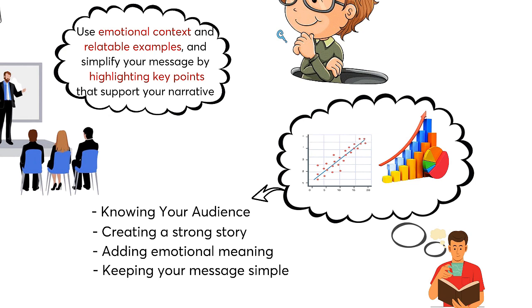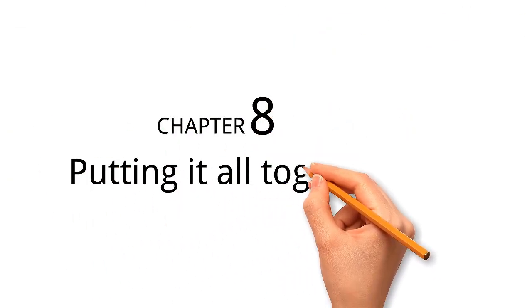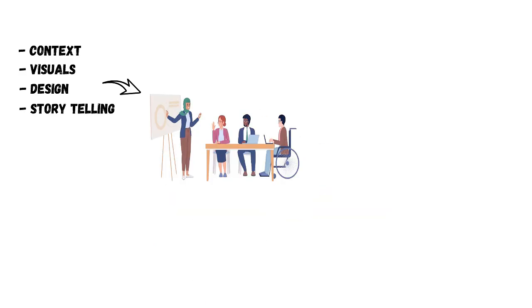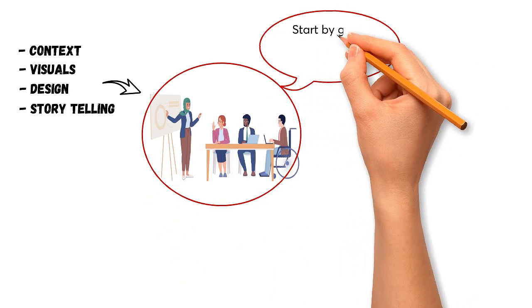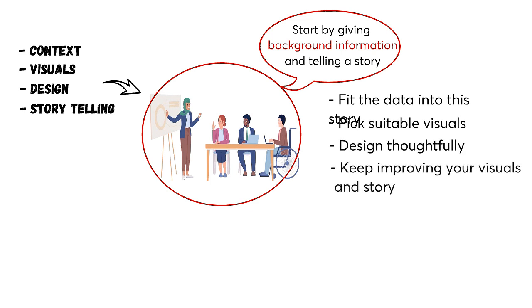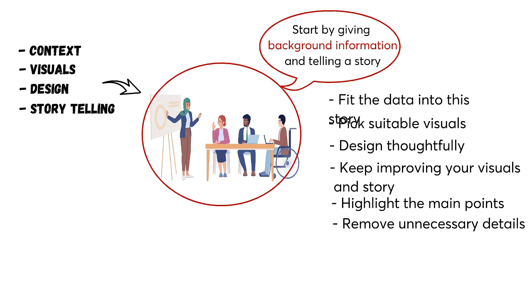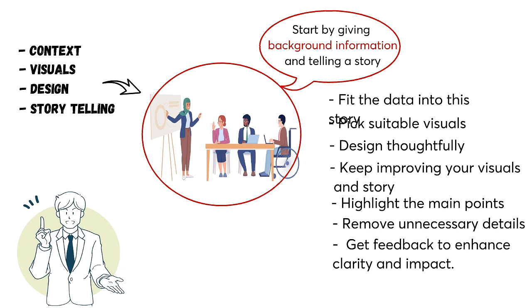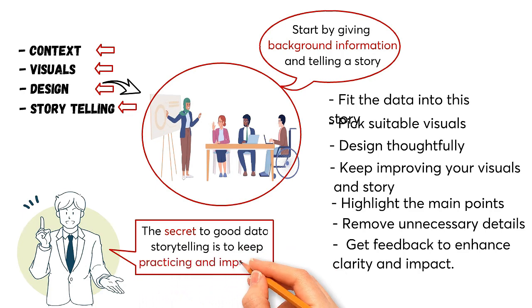Chapter 8, titled Putting it all Together, combines all the ideas and techniques from earlier chapters to make strong data visualizations and engaging data stories. The chapter shows you how to use context, visuals, design, and storytelling to present data effectively and inspire action. Start by giving background information and telling a story, fit the data into this story, pick suitable visuals, design thoughtfully, and keep improving. Highlight the main points, remove unnecessary details, and get feedback to enhance clarity and impact. The secret to good data storytelling is to keep practicing and improving.